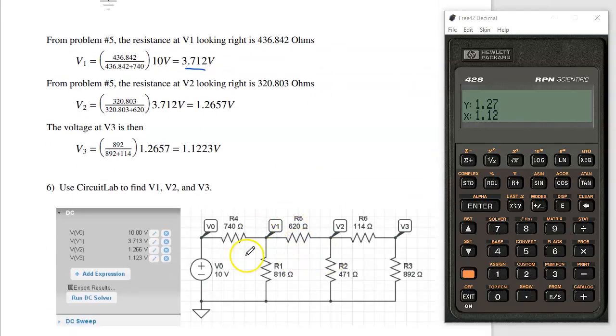Problem 6 is check in Circuit Lab. Build the circuit, find the voltages, and you get exactly the same answer. So that's homework set number 5 for ECE 111.